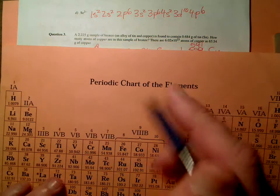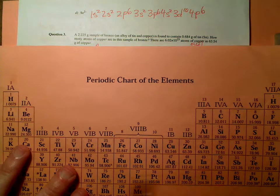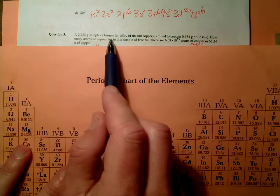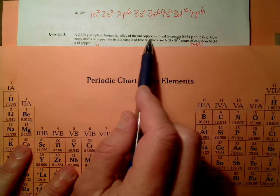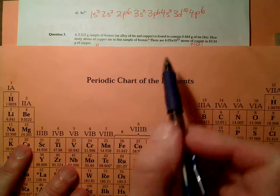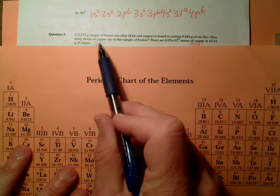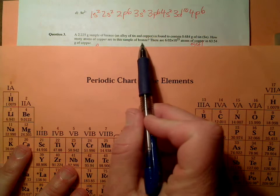All right, let's look at this question on the bronze alloy here. So we have a 2.225 gram sample of bronze, an alloy of tin and copper. So it's a mixture of tin and copper. It's found to contain 0.684 grams of tin. How many grams of copper are in the sample of bronze?